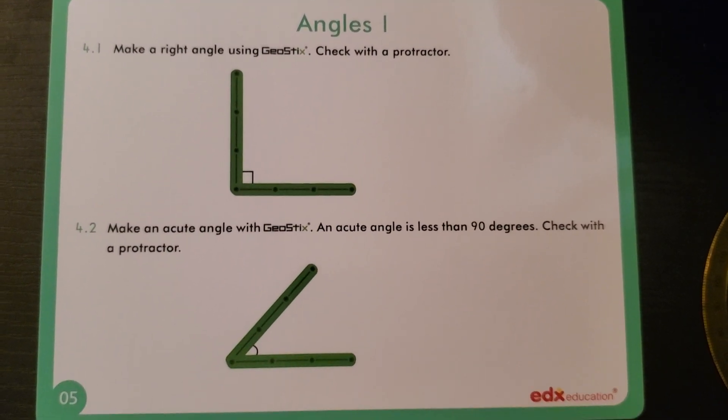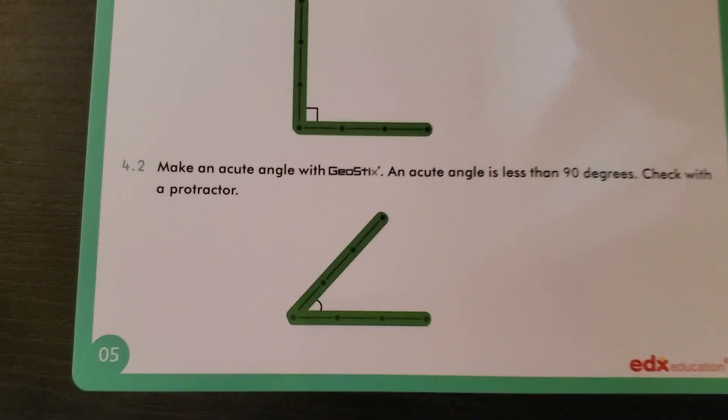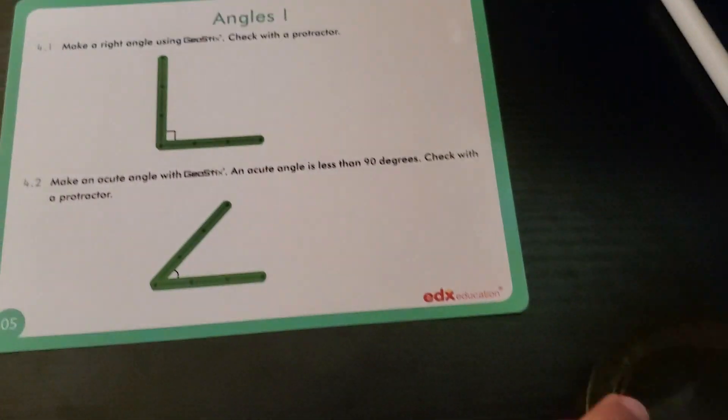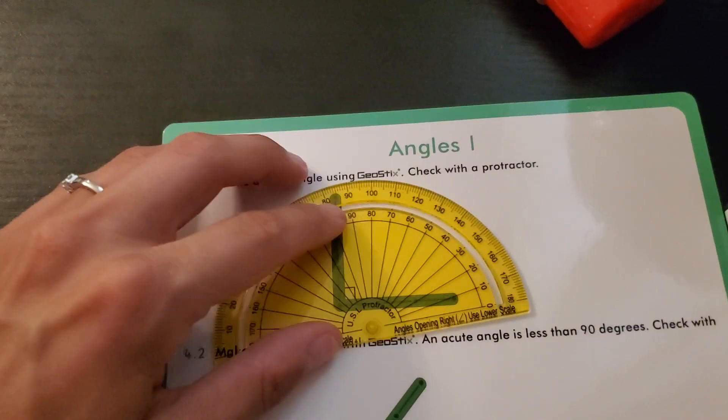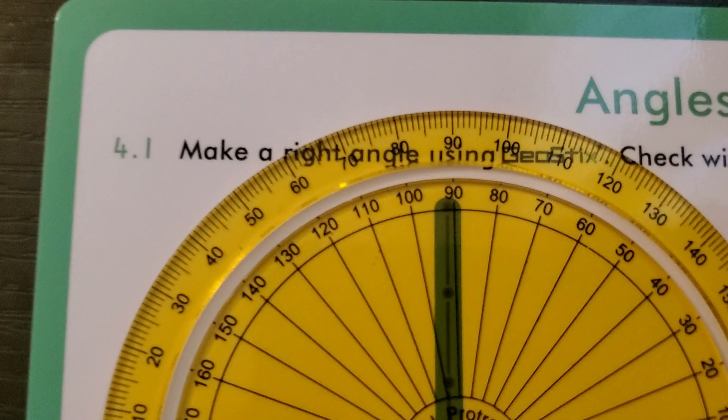Let's talk angles real quick. A right angle is anything that is exactly 90 degrees. This is how it will be viewed. Let's take our protractor and measure it up.